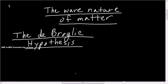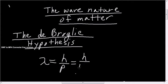The de Broglie hypothesis arose when de Broglie saw that Einstein said light is both a wave and a particle. De Broglie said: if light can be a wave and a particle, why can't particles of matter be a wave? He proposed that the wavelength of matter is equal to Planck's constant over the momentum, or equivalently, Planck's constant divided by mass times velocity.